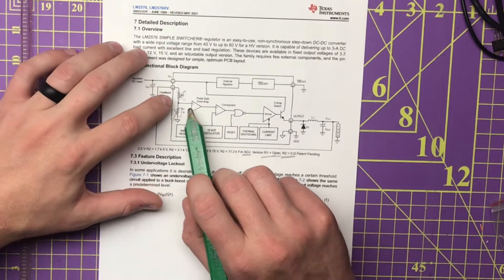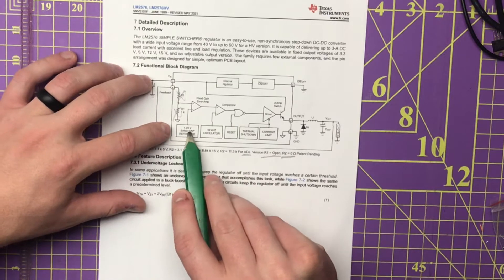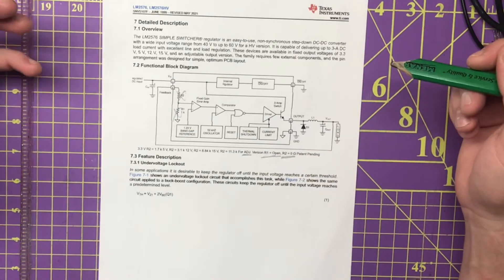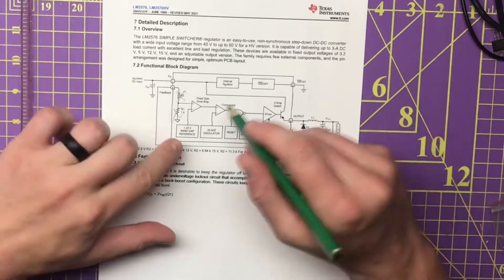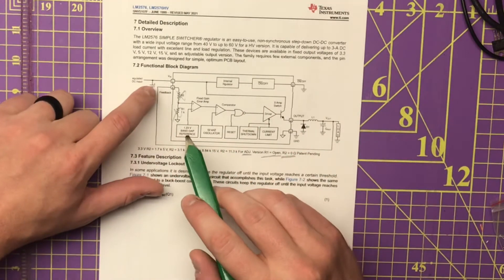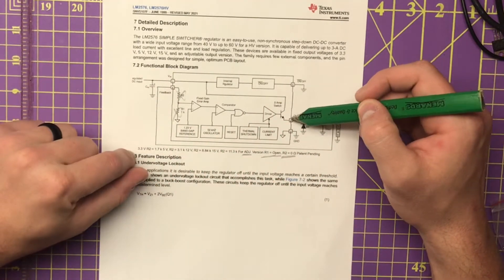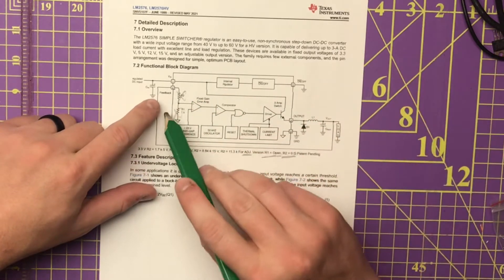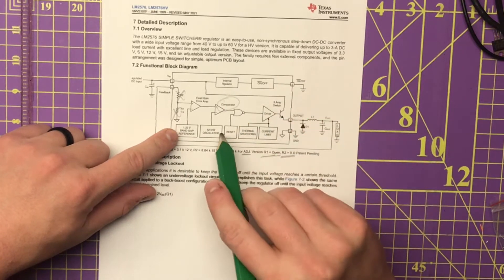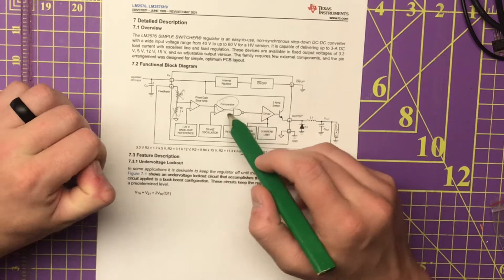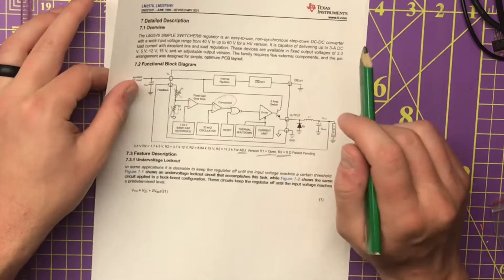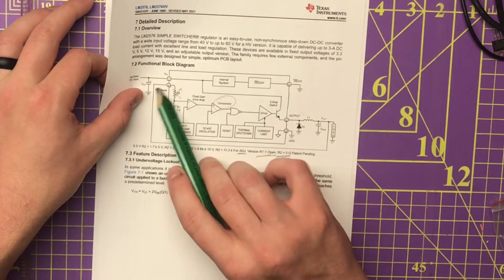So yeah, basically this 1.23 volts is standard for a lot of these types of switching regulators. You'll see this a lot on other videos about these things. Basically, this guy will do whatever in its power to switch this output to get the feedback to equal 1.23 because this is a comparator right here. It'll kick on or off, do whatever it needs to do to maintain 1.23 volts. With that in mind, we are going to stuff back in a voltage into this thing.